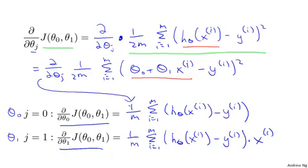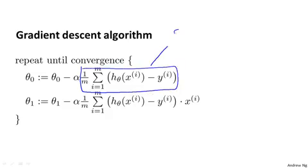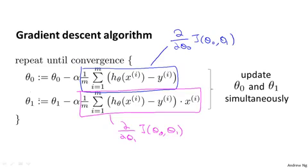Armed with these derivative expressions — which are really just the slope of the cost function J — we can now plug them back into our gradient descent algorithm. So here's gradient descent for linear regression. We repeat until convergence: theta_0 and theta_1 get updated as their current values minus alpha times the respective derivative term. And just as a quick reminder, when implementing gradient descent, you should be updating theta_0 and theta_1 simultaneously.